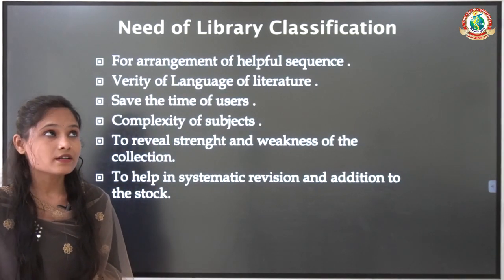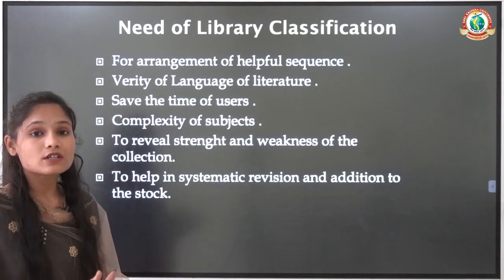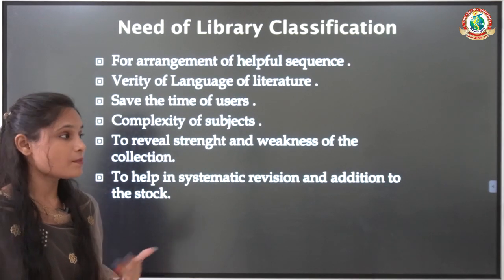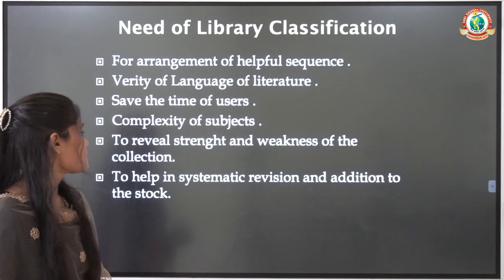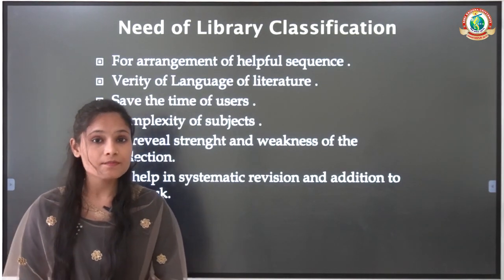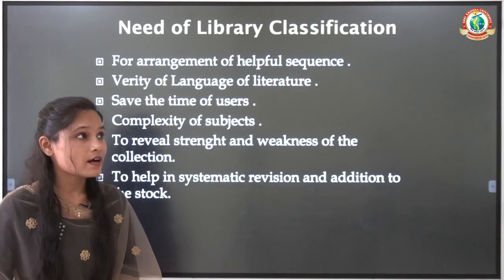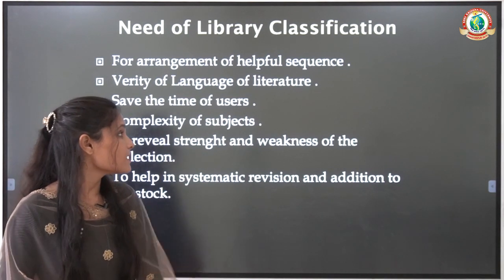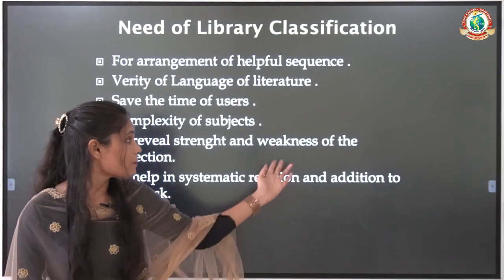If all the documents, books, or any material in a library are arranged in a proper manner or subject-wise in any order, it saves the user's time, because if books are properly arranged, it is easy for us to find them and provide them to the user. Also, to reveal the strength and weakness of the collection: if books and documents are arranged in a proper manner, we can determine how many books are in the library and the nature of our collection. If the collection is good, that is a strength; if there are books that are not very useful, that is our weakness.